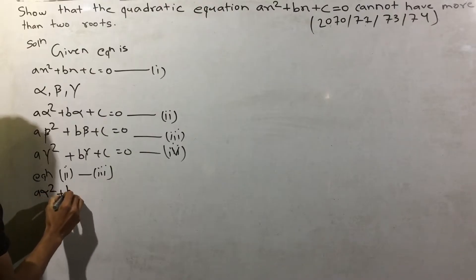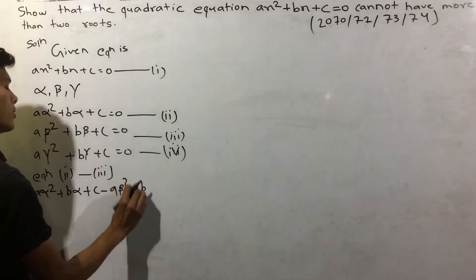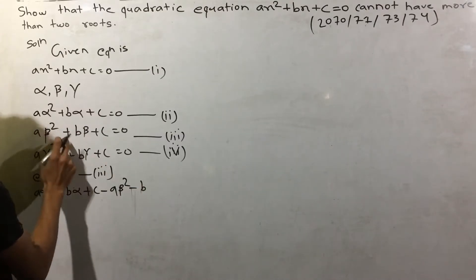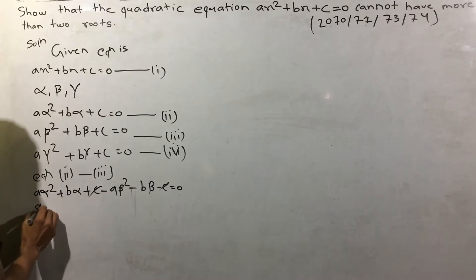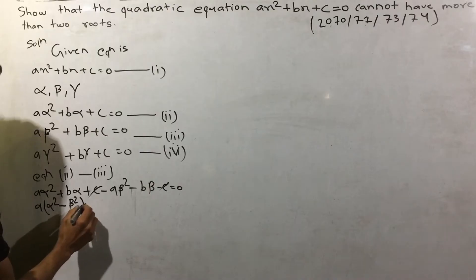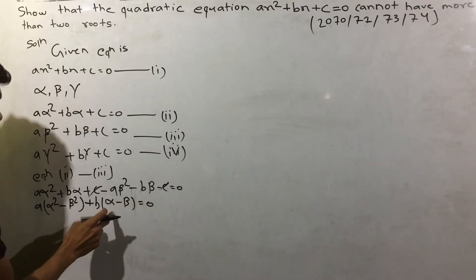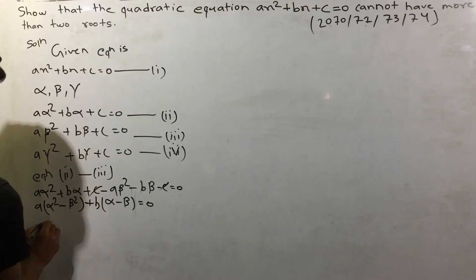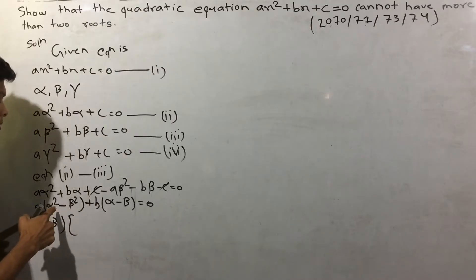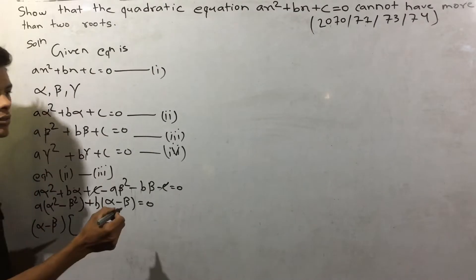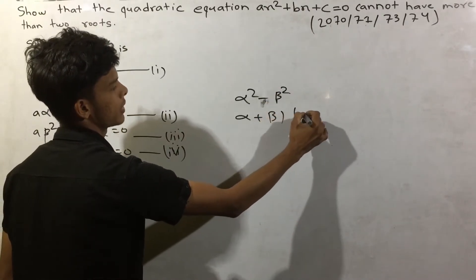a alpha plus b alpha plus c minus a beta squared plus b minus c is equal to zero. Taking a common: alpha squared minus beta squared, back to b, and a alpha minus beta.